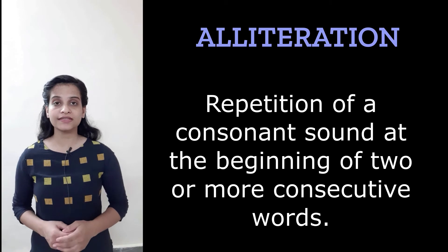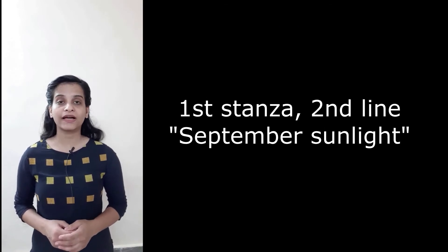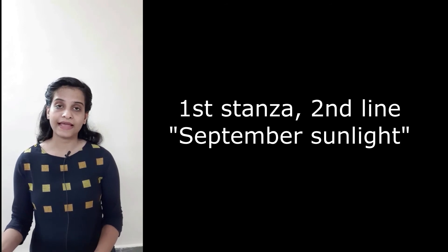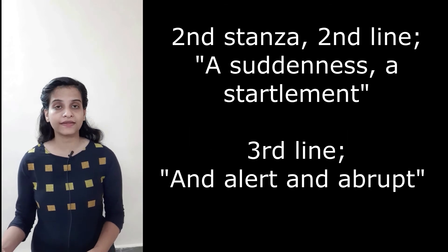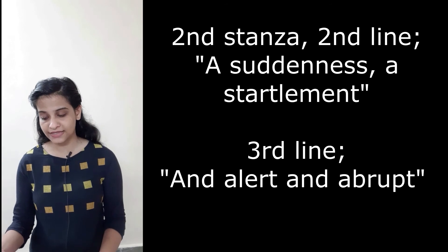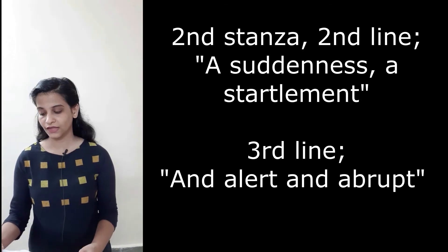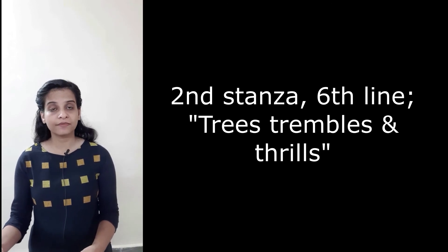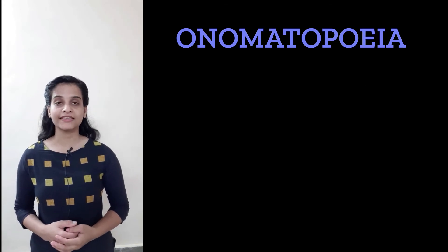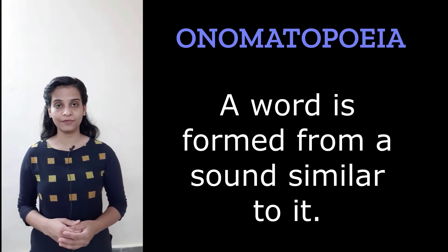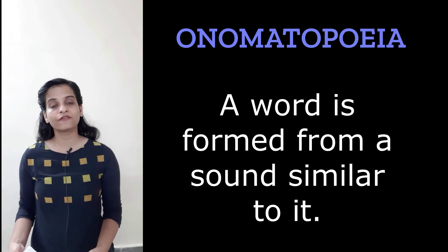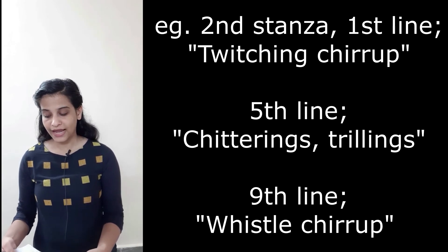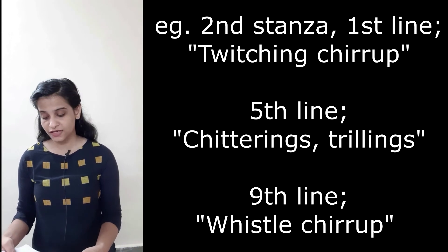Examples of alliteration in the poem: in the second line of the first stanza, 'September sunlight' is an example of alliteration. In the second line of the second stanza, 'a suddenness, a startlement' is another example. The last example is from the sixth line of the second stanza: 'tree trembles and thrills.' The fourth poetic device is onomatopoeia — a word formed from a sound similar to it. Examples include 'twitching' and 'chirrup' from the first line of the second stanza, and 'chitterings' and 'trillings' from the fifth line of the second stanza.